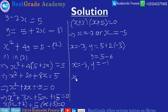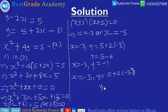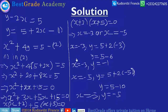When X equals negative 5, substituting into equation 1 gives Y equals 5 plus 2 times negative 5, which equals 5 minus 10, giving Y equals negative 5. Therefore our solution set is: X equals negative 3 and Y equals negative 1, or X equals negative 5 and Y equals negative 5.